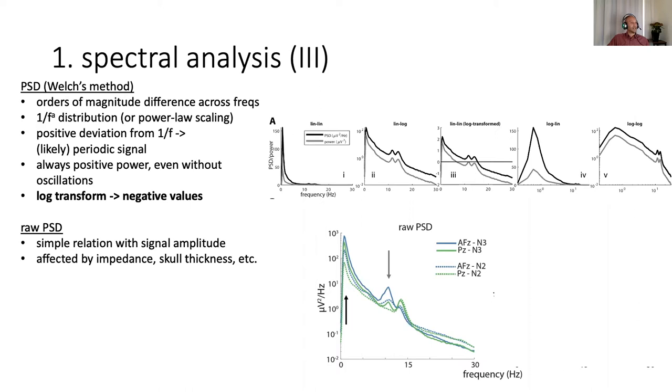Another thing to mention is that instead of making the y-axis logarithmic, we can also take the logarithm of the power itself. But then it's important to realize that whenever your raw power was below 1, the logarithm will turn that into a negative number. And that's important because if you're not aware of that, you might not understand what's happening to your values. The raw power or PSD has a relatively simple relation to the signal amplitude in the sense that larger amplitudes translate into greater power.